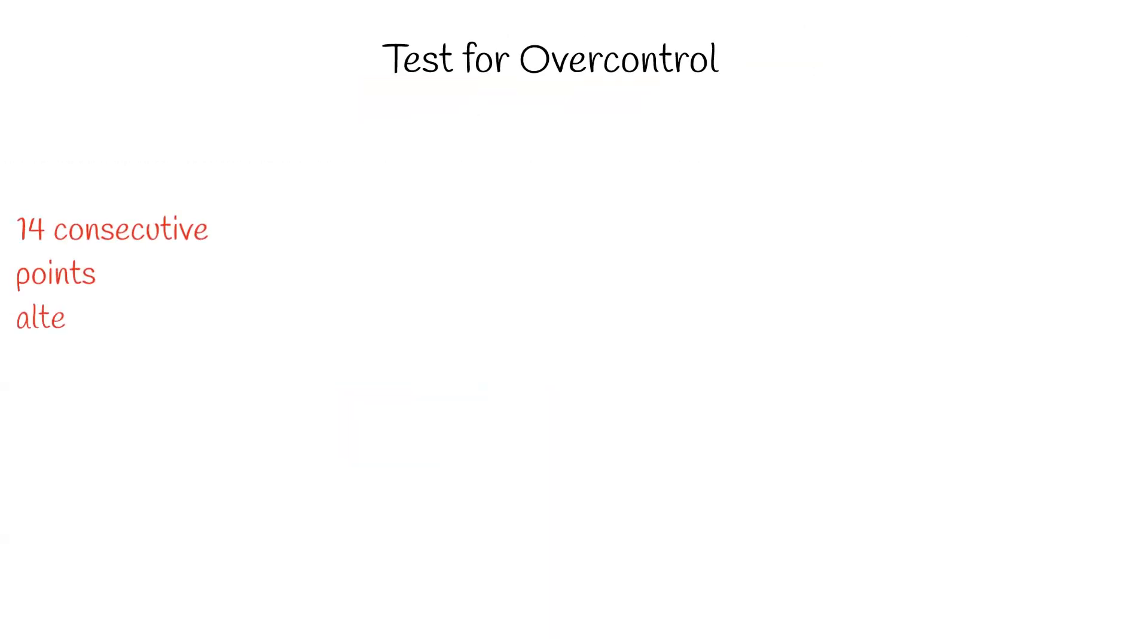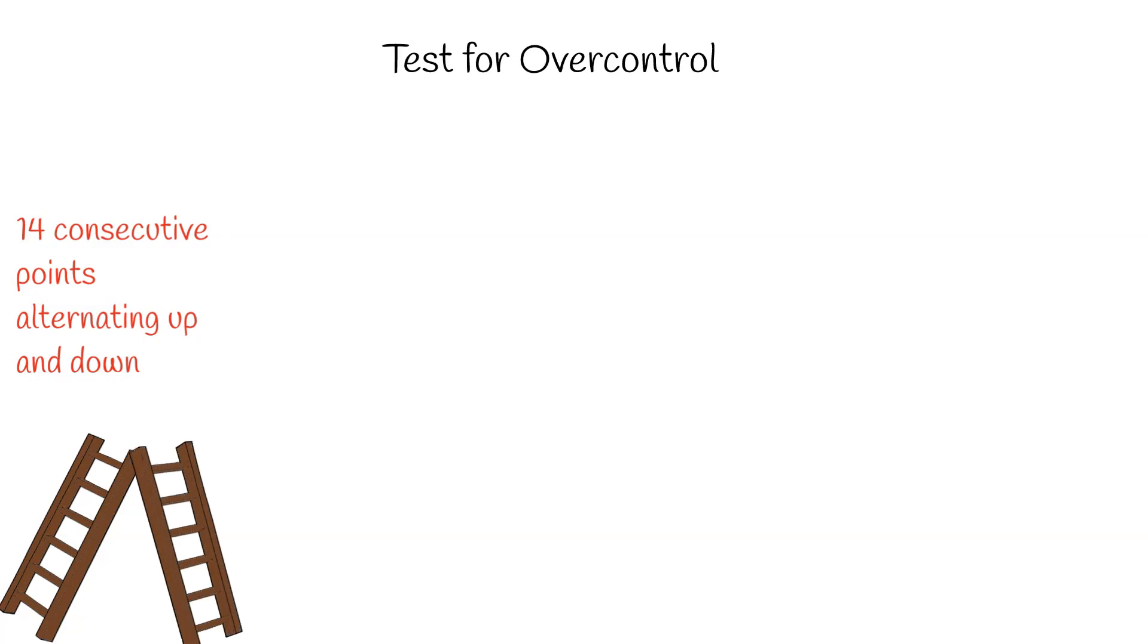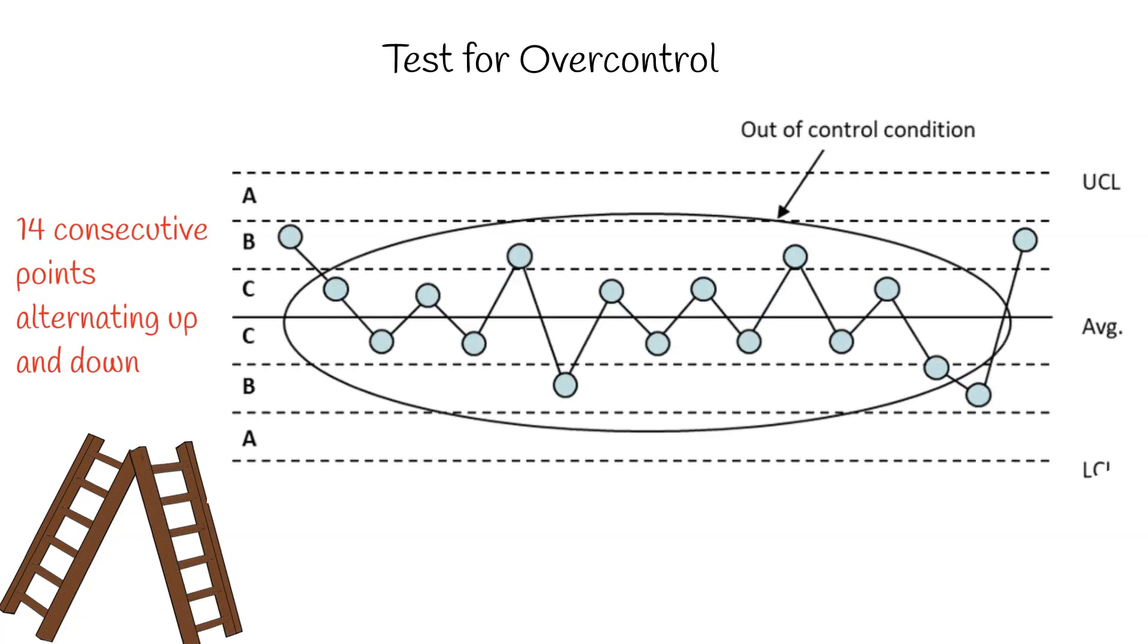Then we have a test for over control. If you have 14 consecutive points alternating up or down, you have an out of control situation. And this applies to the entire chart as well.